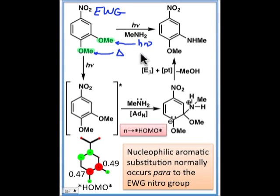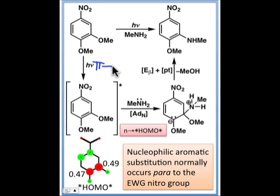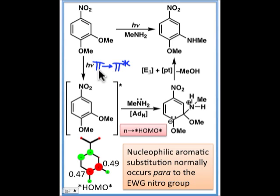How can we rationalize this outcome? Photoexcitation of this substrate involves moving an electron from a pi MO into a pi star MO, and that makes this substrate an even better electrophile because rather than using the electrophilic pi star, we now have a partially empty pi orbital, and that becomes the electrophilic species.